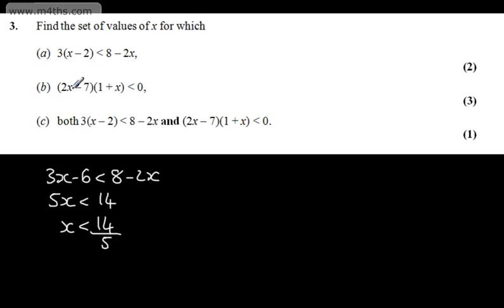In part b, for 3 marks, we've got (2x - 7)(1 + x) < 0. So if we consider the critical values, we've got 7/2 and we've got -1. I'm just going to draw a quick sketch up.